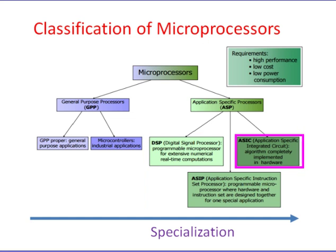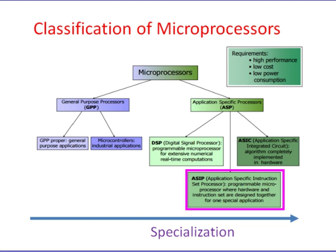Application Specific Integrated Circuit (ASIC): the algorithm is completely implemented in hardware. Compared to GPP, ASIC-based systems offer better performance and power consumption at the cost of flexibility and extensibility. Although it is difficult to use the ASIC for purposes other than what it was designed for, it is possible to use a GPP to perform more general, less demanding tasks in addition to the ASIC in the same system.